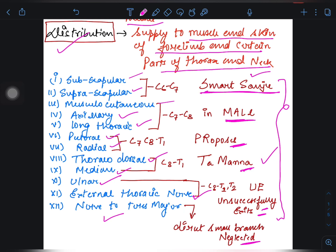So initial letter is S, it refers to subscapular. Second is suprascapular. Then MALL, it's written in capital, you can see it. So first is musculocutaneous, second is axillary, then it's long thoracic. Then Smart Sanju In MALL Proposes, so P and R are capital. That refers to pectoral and radial. Then thoracodorsal, T and M, capital T means thoracodorsal, M means median.